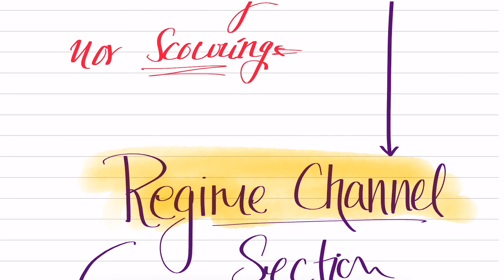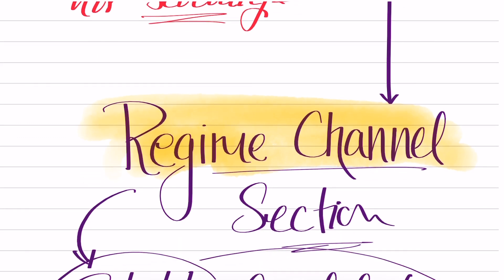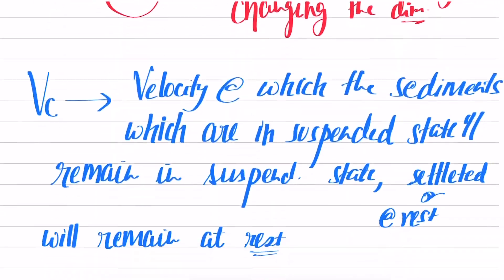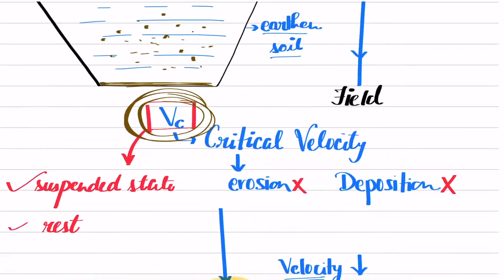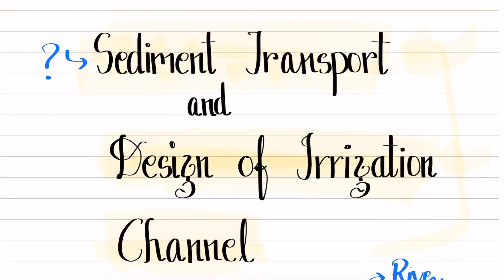These are the few terms we have discussed: silting, scouring, regime channel, and critical velocity. In the upcoming lectures, we are going to discuss the theories related to the design of the irrigation channel, their design steps, and do some numerical problems. We are also going to understand the mechanism of sediment transportation and do numericals on that as well. I hope this video lecture was useful to you. If so, subscribe to the channel, like the video, and post your reviews in the comment section. If you have any doubt, you can always ask in the comment section. Thank you for watching.